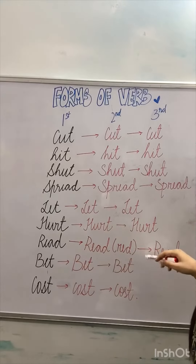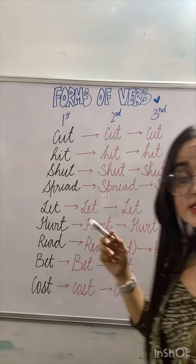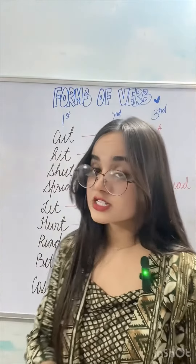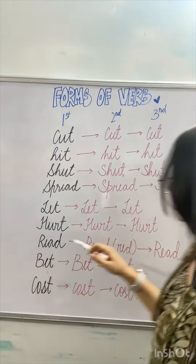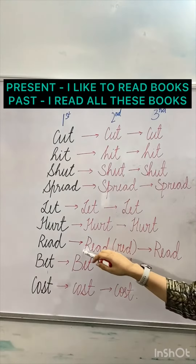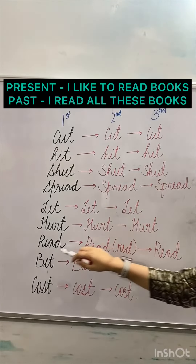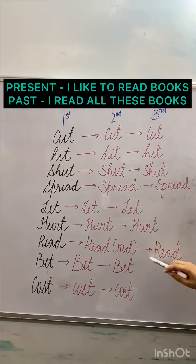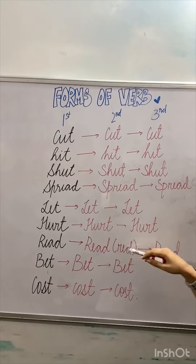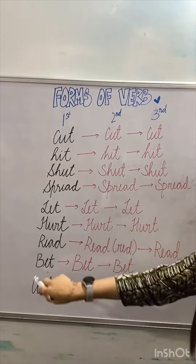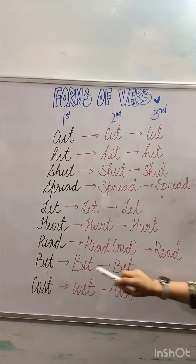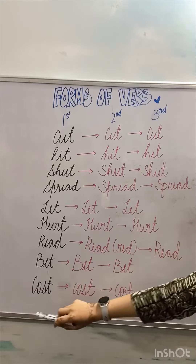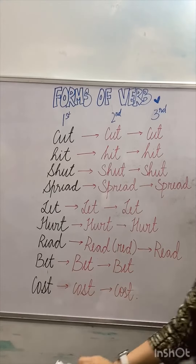This is 'read' — the second and third forms have the same spelling, but the pronunciation is different. Present tense is 'read' (reed), and past tense is also 'read' but pronounced 'red'. Similarly, 'bet, bet, bet' follows the same pattern.